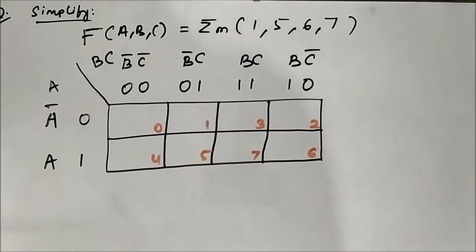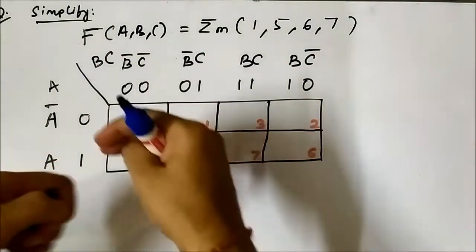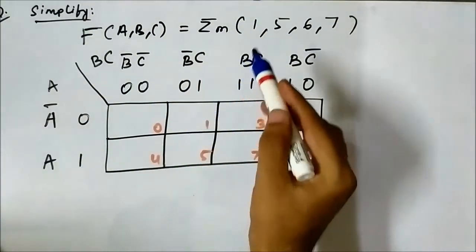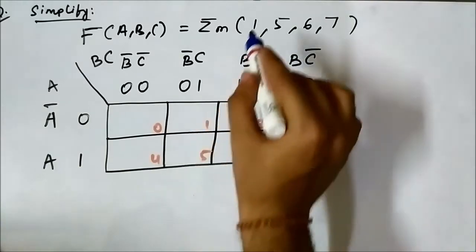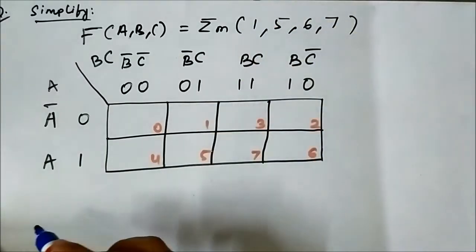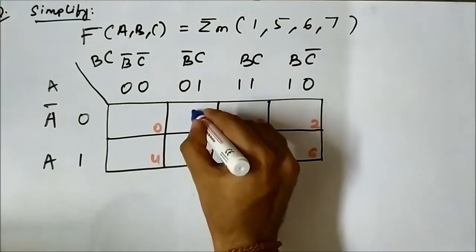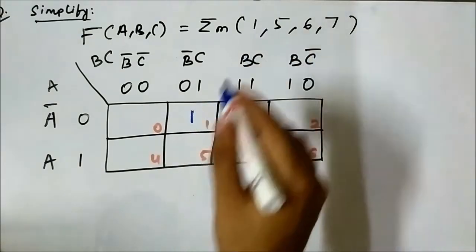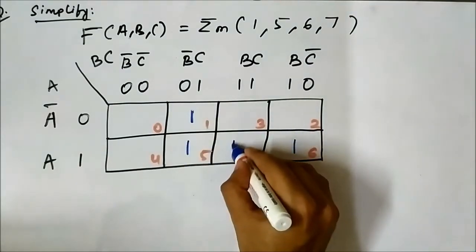This is the 8th question related to 3-variable SOP K-map simplification. We have this Boolean expression given in terms of minterms. We have the format of the K-map, so we'll directly map the Boolean expression and mark the cells as 1 with values 1, 5, 6, 7.